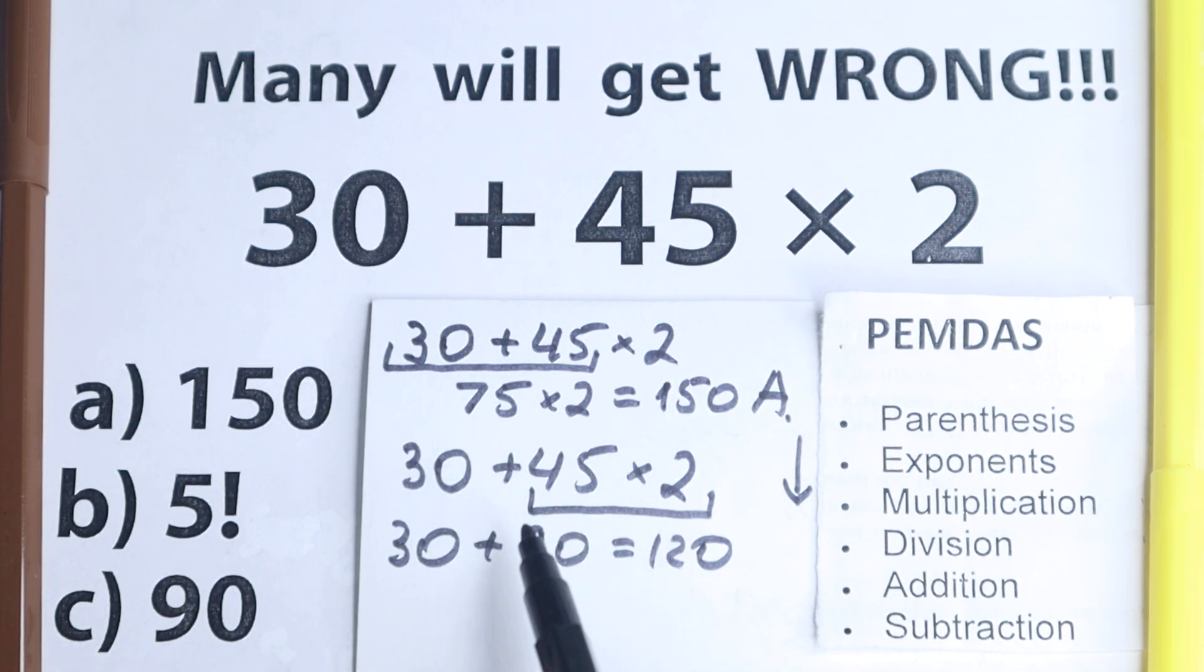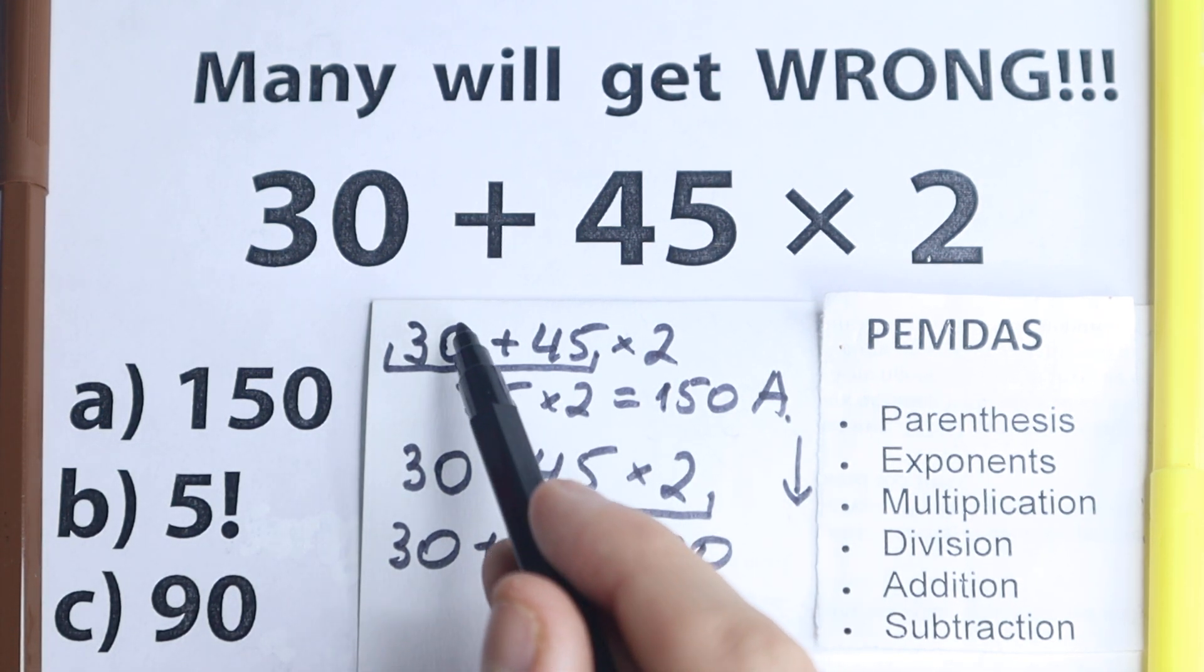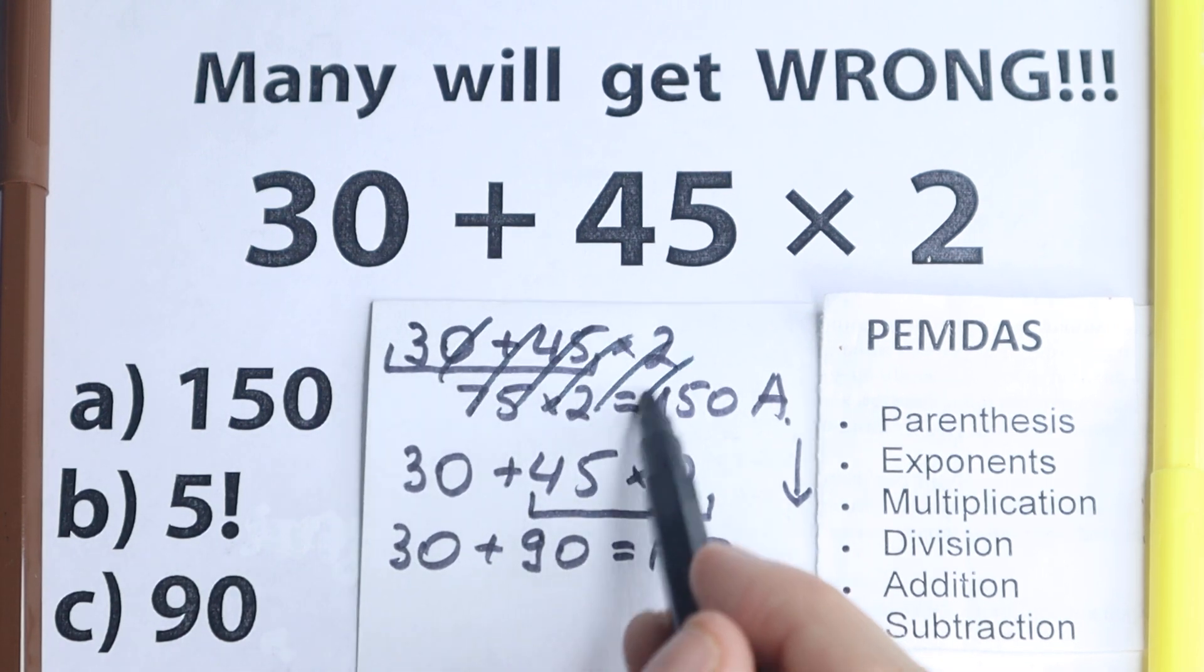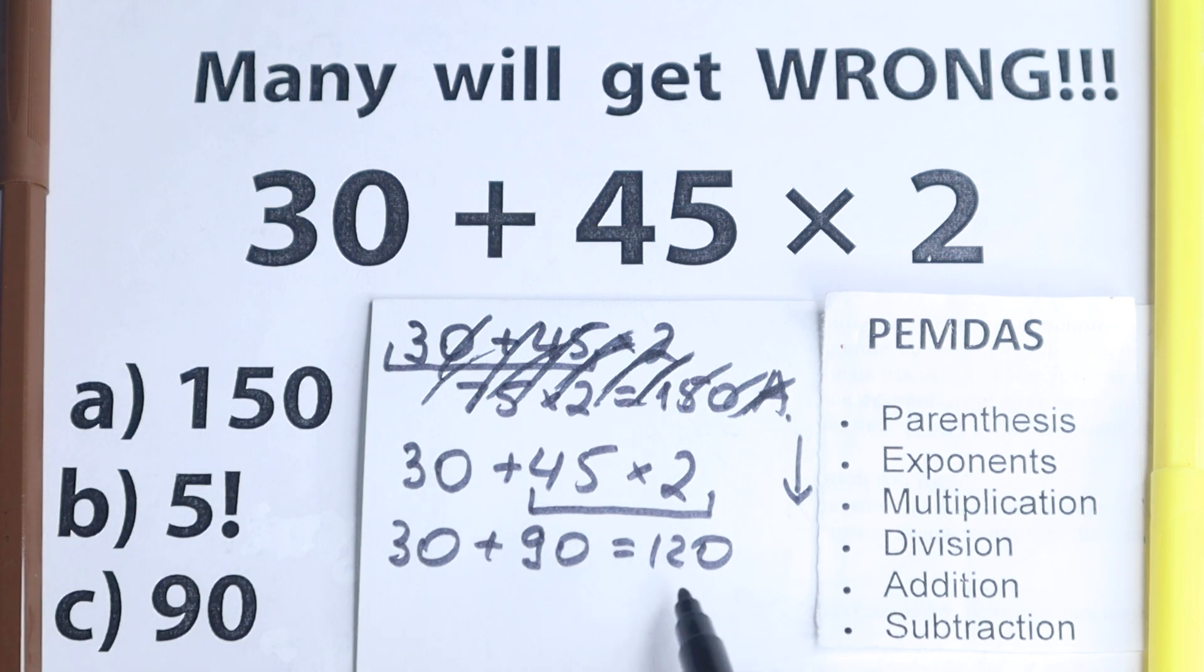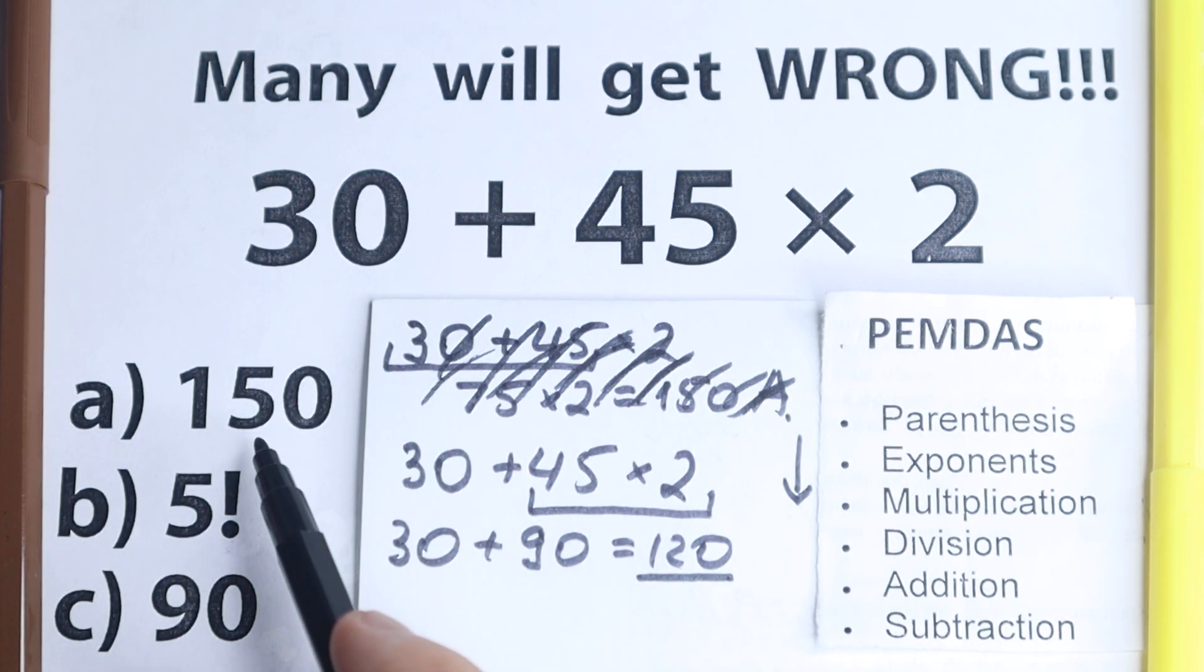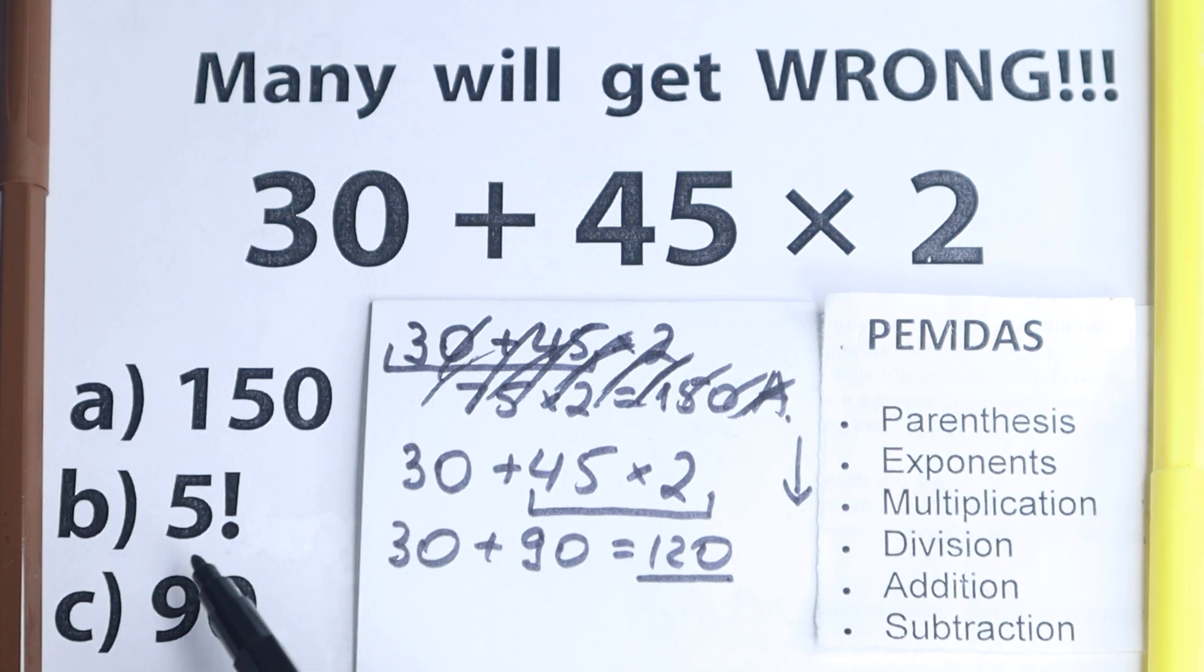Of course, this is the correct solution. This is absolutely incorrect. Forget this solution. I just wanted to write with a black pen right here, this is incorrect solution. Let's look at this correct solution right here, because obviously we don't see this solution right here. We have 150, we have 90, but what about this 5 factorial?